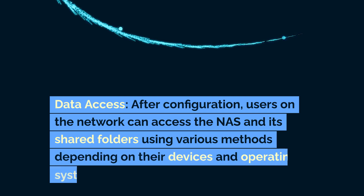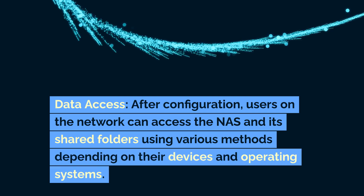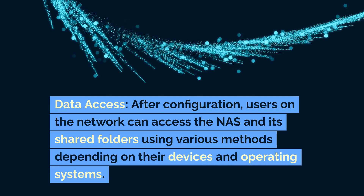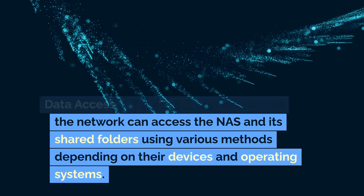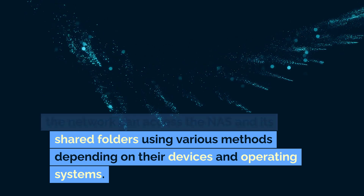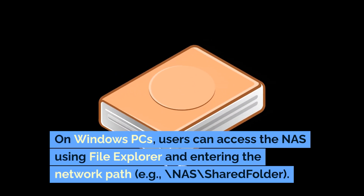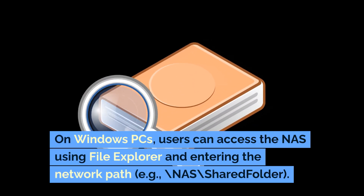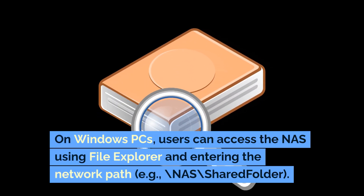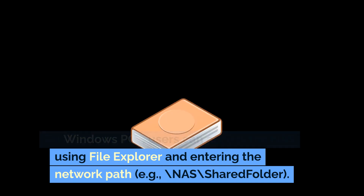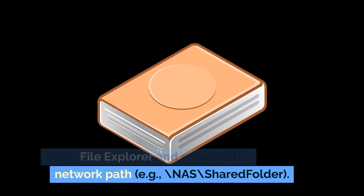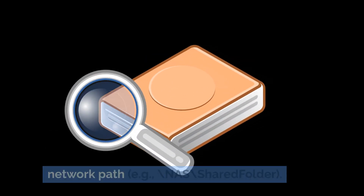Data Access: After configuration, users on the network can access the NAS and its shared folders using various methods depending on their devices and operating systems. For example, on Windows PCs, users can access the NAS using File Explorer and entering the network path, e.g., \NAS\SharedFolder.